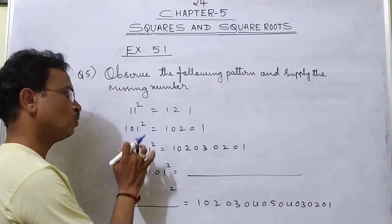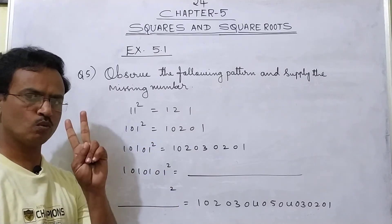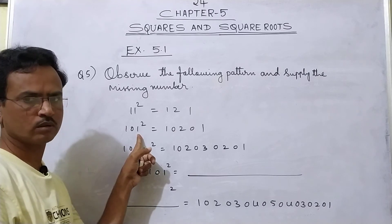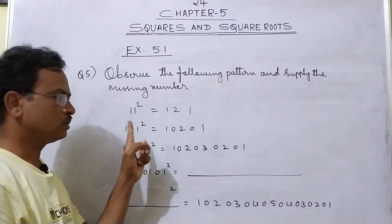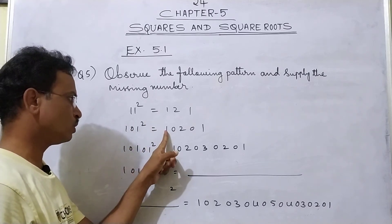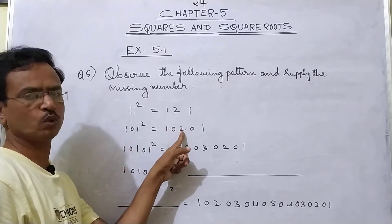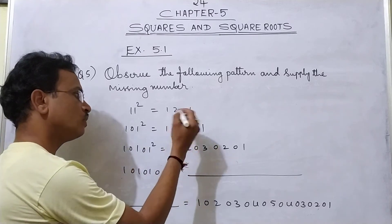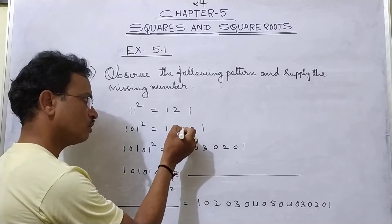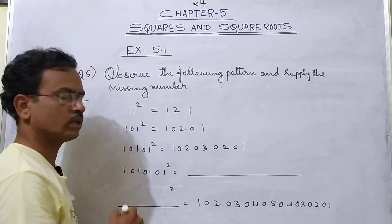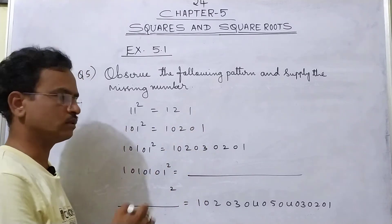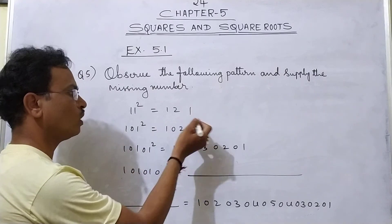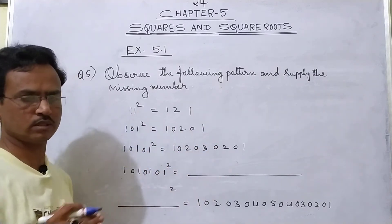1 is given 2 times. So first you write 1, 0, then 2. Then before 2, what is there? That digit you write — 0. Then before 0, what is there? 1. Reverse — increase then decrease.